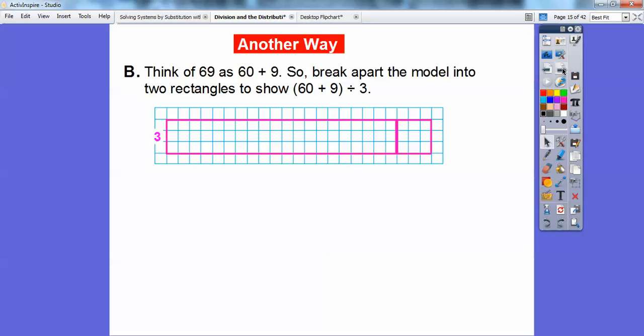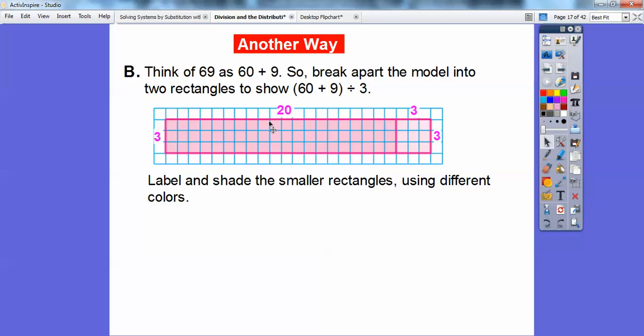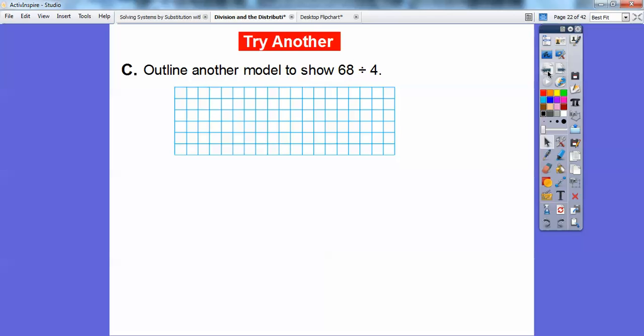We can label and shade the smaller rectangles using different colors. There's that right there, and then so this one has 20 rows of 3, and then this one has 3 rows of 3 right there. So each rectangle models a division. So 69 divided by 3 is going to be 60 divided by 3 plus 9 divided by 3. And 60 divided by 3 is 20 because 6 divided by 3 is 2, and then add a 0 for that. And 9 divided by 3 is going to be 3. So I'm going to put that right there, and then 20 plus 3 is 23. So either way we get it, we're going to get 23 on that way.